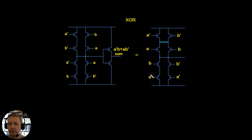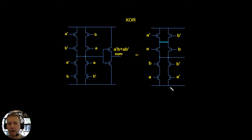We're going to get that if we have A and B on one side and A-dash and B-dash on the other side. If both inputs were low, then both of these values here would be off, but both of the complemented values would be on — so this would be pulled low. That means whenever we've got a zero and a zero in, we'll have a zero out.